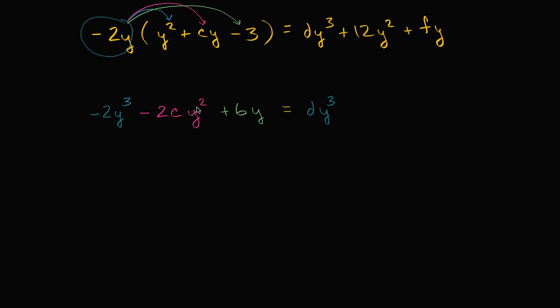And then I wrote the y squared term in magenta. So let me write the y squared term in magenta here. So plus 12 y squared. And then last but not least, I wrote the first degree term, this y term in green. So let me write the first degree term in green right over here. So plus fy.